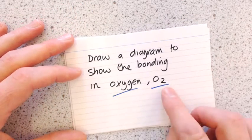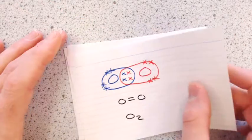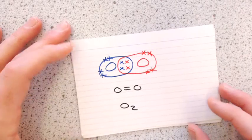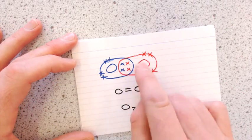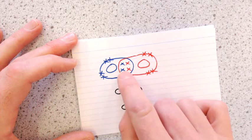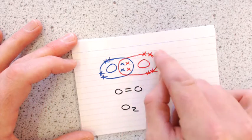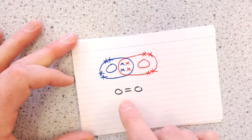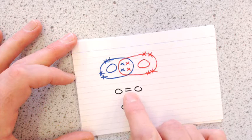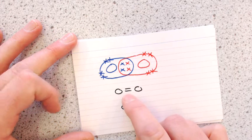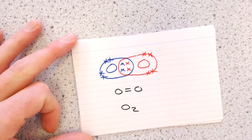Oxygen: again two non-metals, so covalent bonding. The difference here is that to get a full shell you need a double bond. Between the two oxygens there are two pairs of shared electrons, so both atoms have eight electrons in their shells in total. You write that as O=O — that's a double bond, not an equals sign — or as O₂.